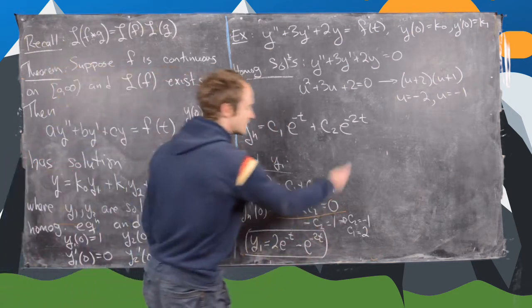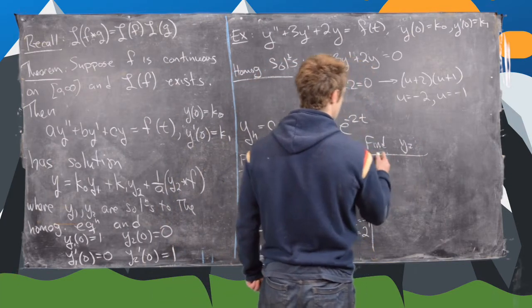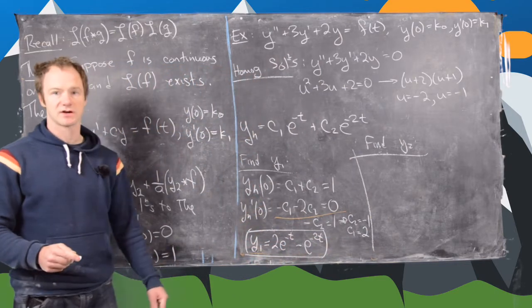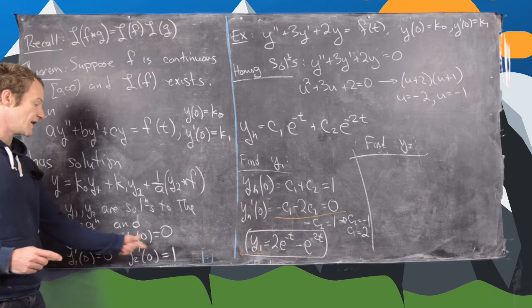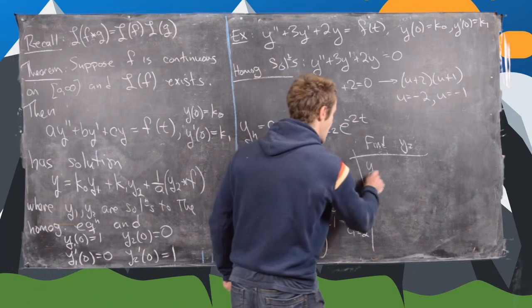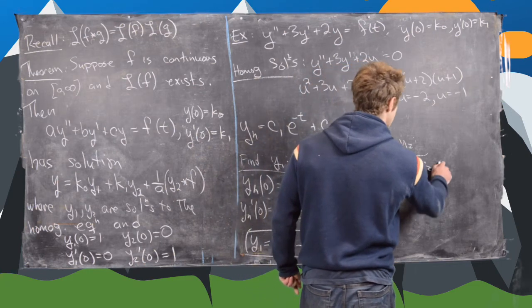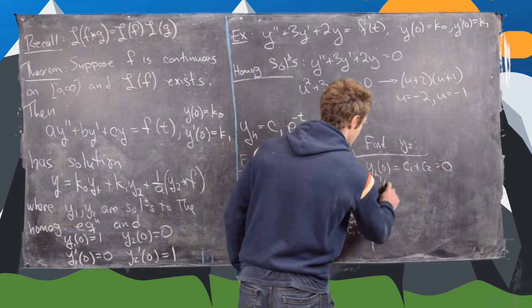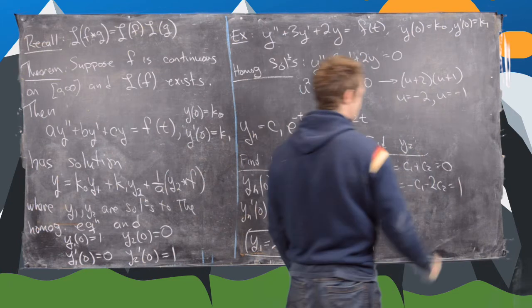Okay. So there's our value for y1. And now let's do the same thing for y2. So we need to find y2. So we're going to impose a similar system of equations. But now we need the non-derivative to be 0 and the derivative to be 1. So let's see. We need yh of 0, which is c1 plus c2 to be 0, and yh prime of 0, which is minus c1 minus 2c2 to be equal to 1.